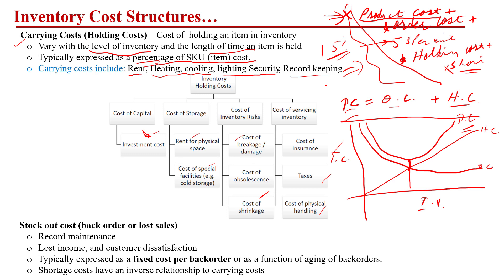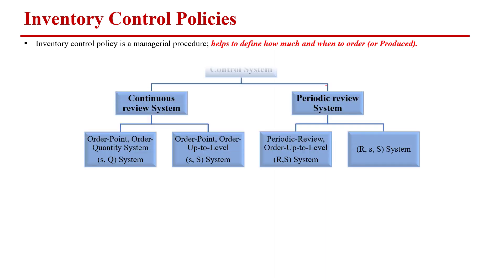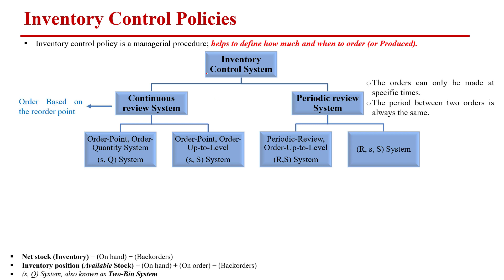To find how much and when to order, it depends on what kind of inventory control system we adopt. The first type is the continuous review system, and the second is the periodic review system. In a continuous review system, we monitor the SKU on a quantity or reorder-point basis — when the inventory reaches a certain level, we place the order. In a periodic review system, the review happens at fixed time intervals — after a certain time, we place the order.